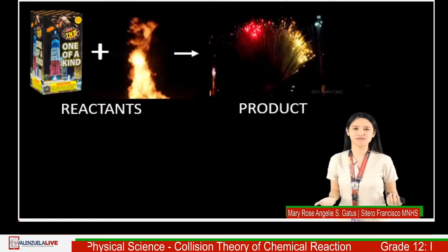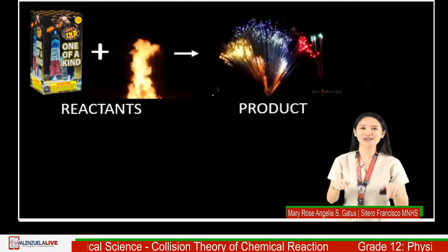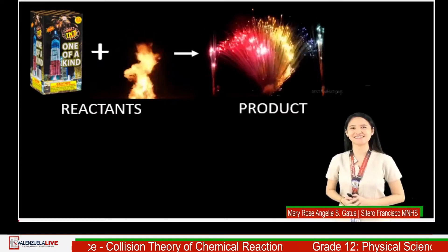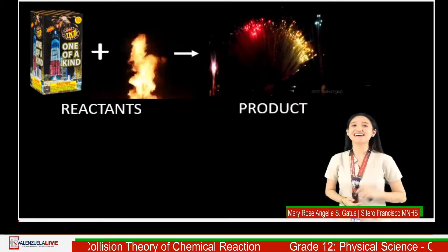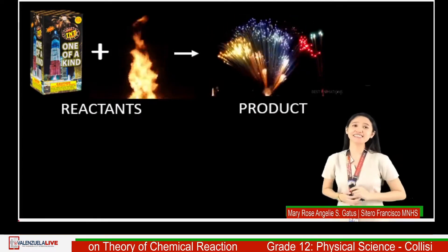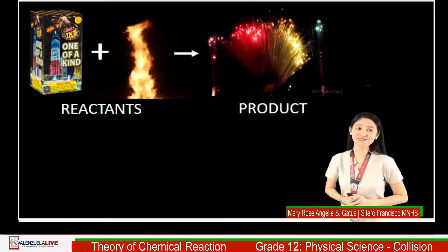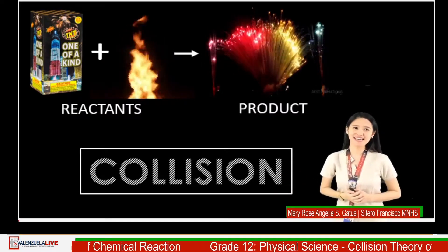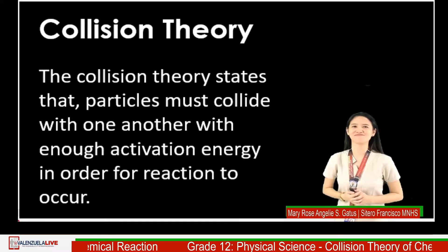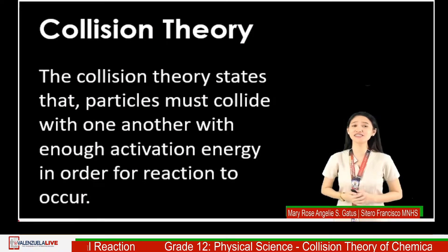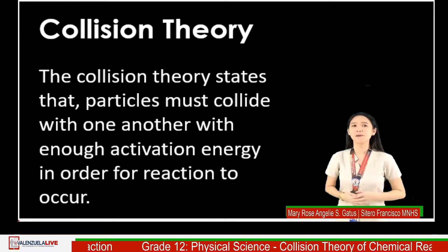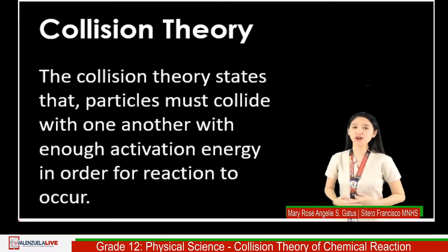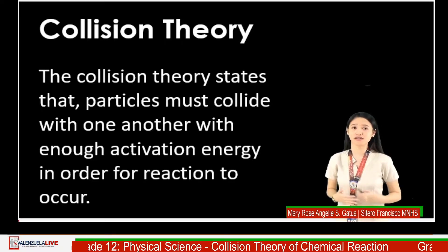A chemical reaction is a process by which chemicals interact to form new chemicals with different compositions — or simply the process where reactants are transformed into new products. Just like in our example, the reactants are the firework and the fire, which react to one another, resulting in a colorful fireworks display, also known as the product. So how is this possible? That is because of collision. The collision theory states that particles must collide with one another in order for a reaction to occur.